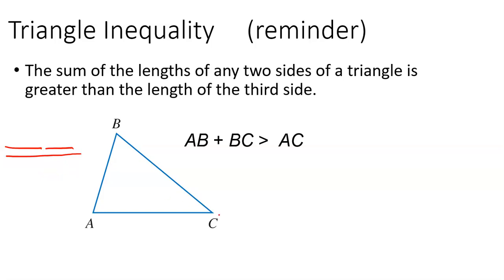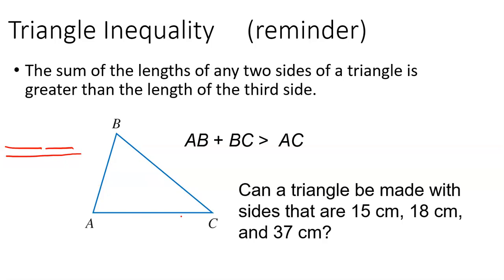There are actually two other parts of the triangle inequality: AC and BC have to be greater than AB, and AB and AC have to be greater than BC.